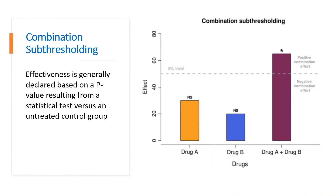The combination sub-thresholding approach consists of showing that a combination of non-effective doses of drugs yields a significant effect. Effectiveness is generally declared based on a p-value resulting from a statistical test versus an untreated control group below the 0.05 level.